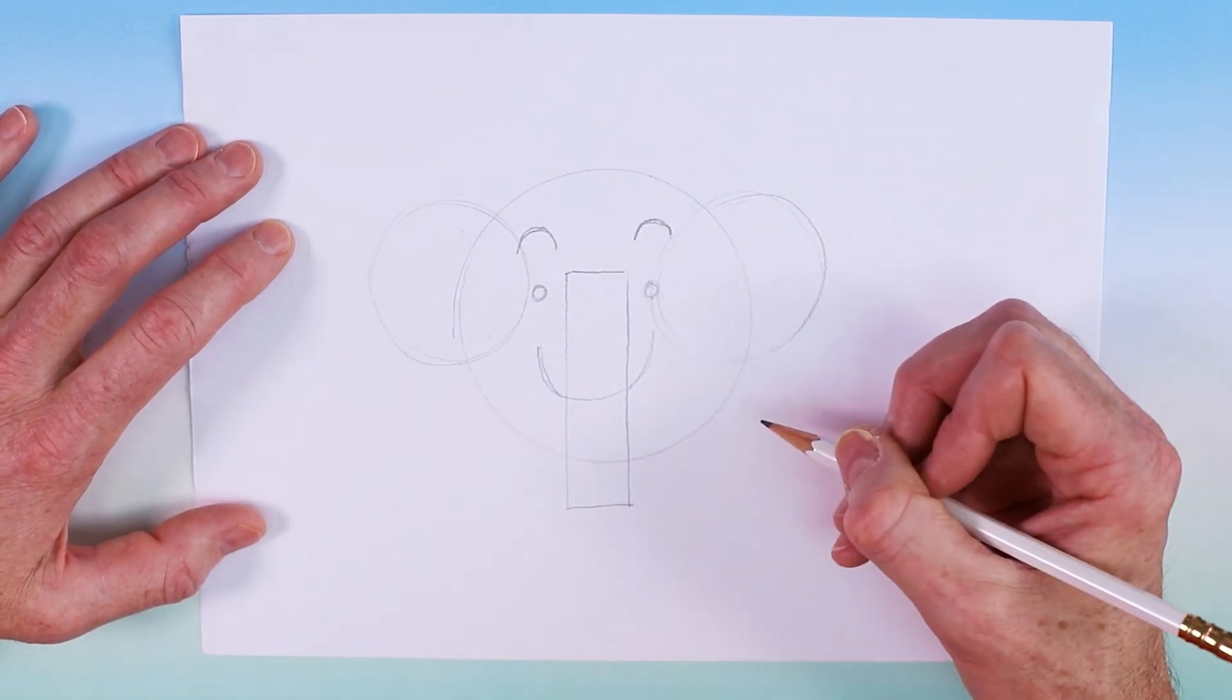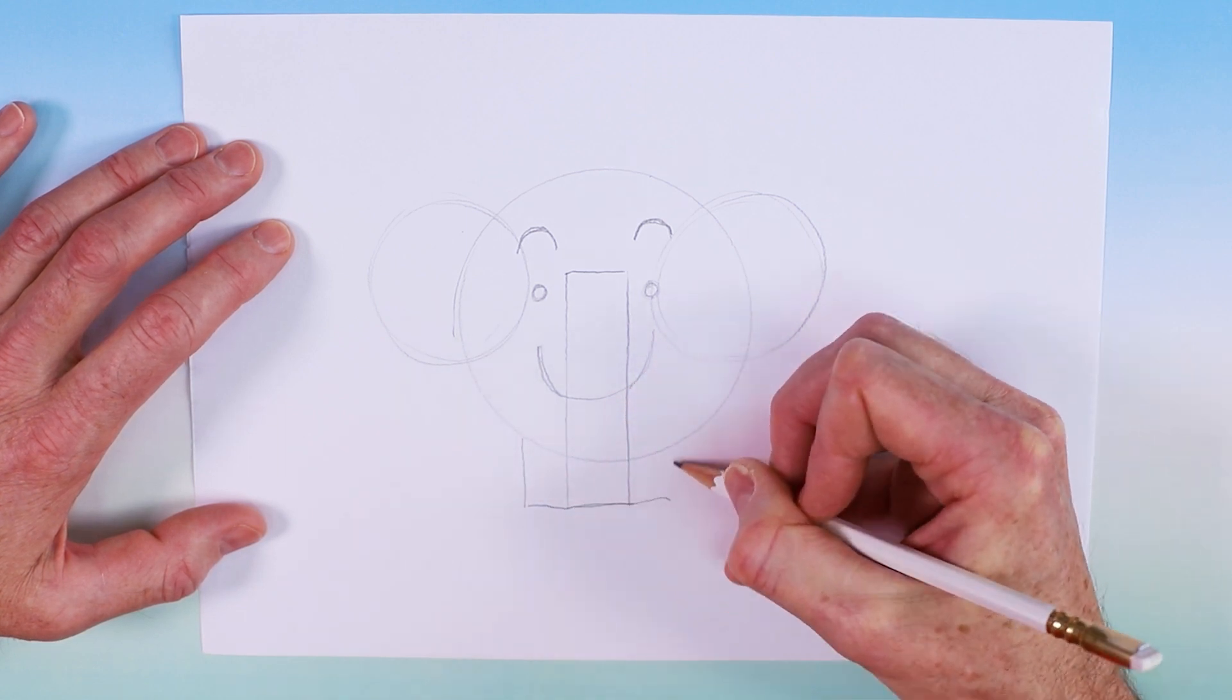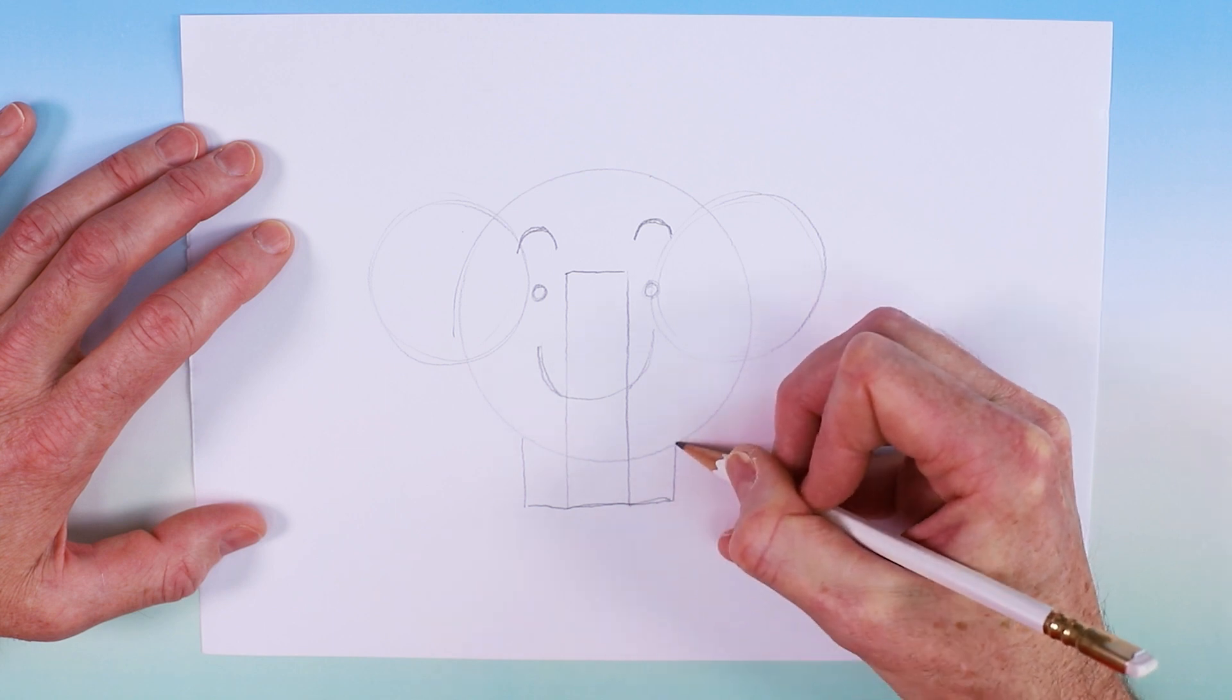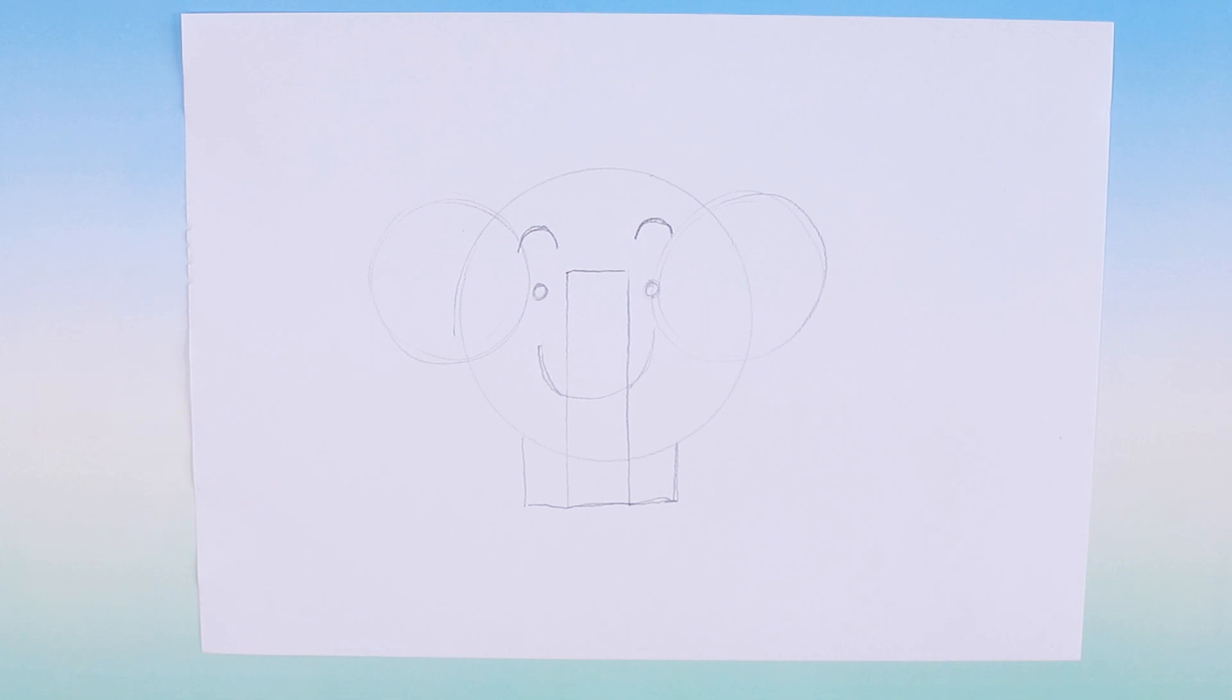And now to finish it off we have part of a square for the feet. And there we have the pencil outline of our elephant.